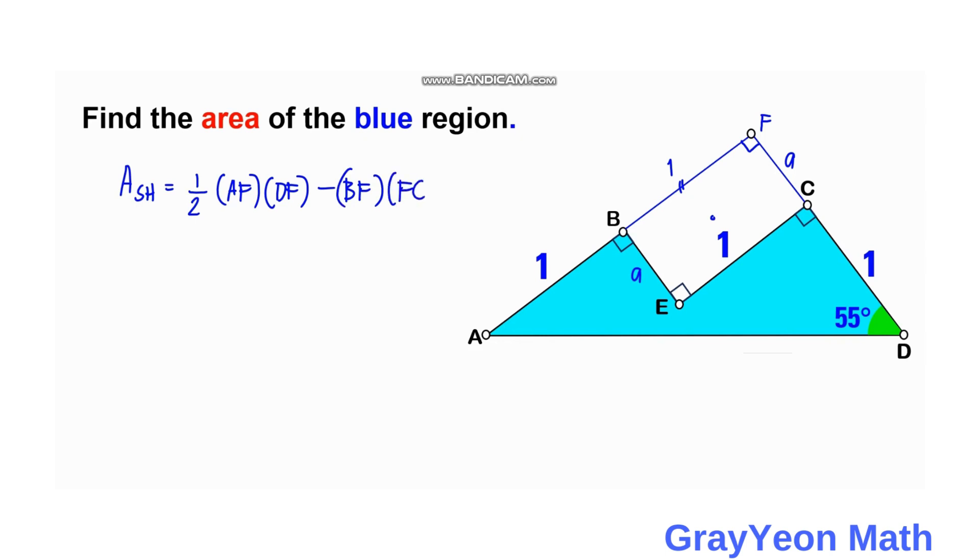Area of the shaded is equal to one half times AF, which is 2, times DF, which is 1 plus A, minus BF times 1 times A. So we can actually cancel this, and we have 1 plus A, and this becomes A. This is negative, so we'll cancel this, so we are left with the area.